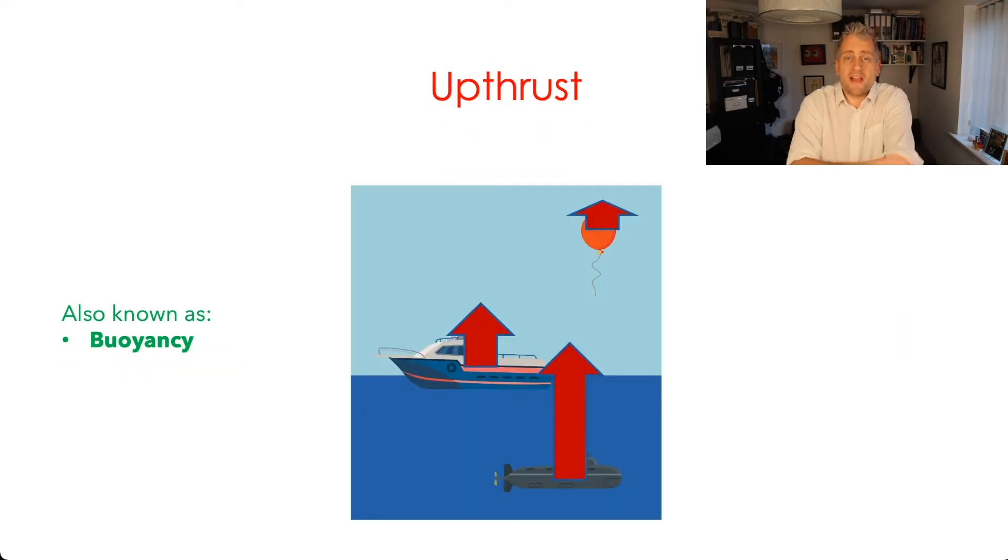So up thrust can affect anything that's floating in a liquid or a gas. So anything that's floating in a fluid. I mean it doesn't have to be floating it could be sinking actually as well but anything that's within a fluid. So some examples that we're likely to use are balloons. They've got an up thrust from the air around them. A ship floating on the top of some water or even a submarine that's underwater. All three of those have got up thrust.